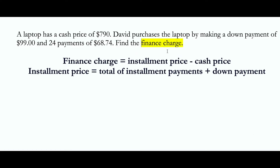In order to find the finance charge we're going to apply the formula that you see right here: installment price minus cash price. In order to find installment price we're going to apply our installment price formula, which is the total of installment payments plus down payment. So to find finance charge we need to first find installment price.